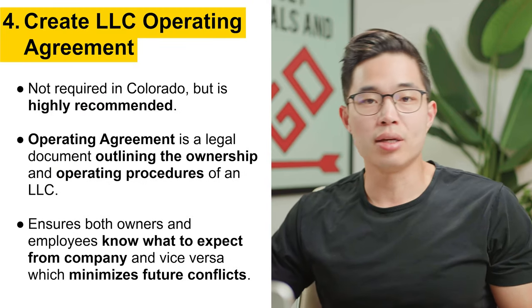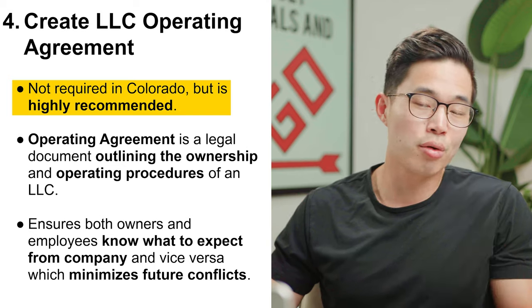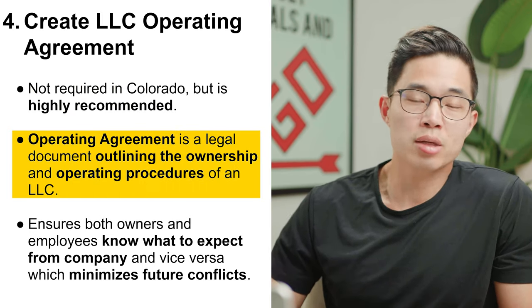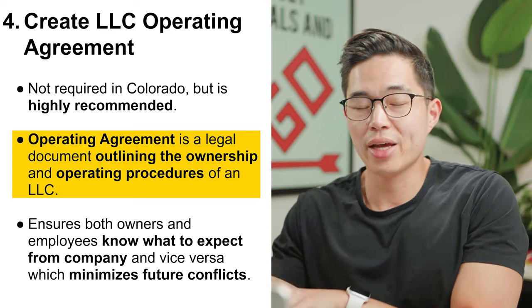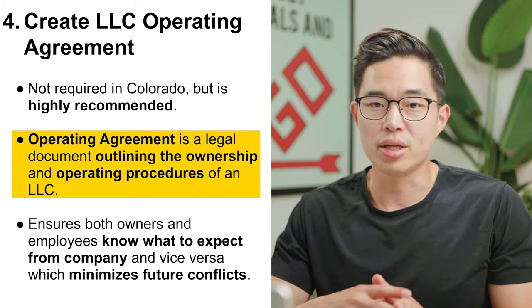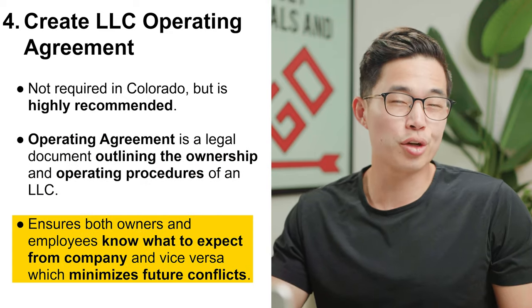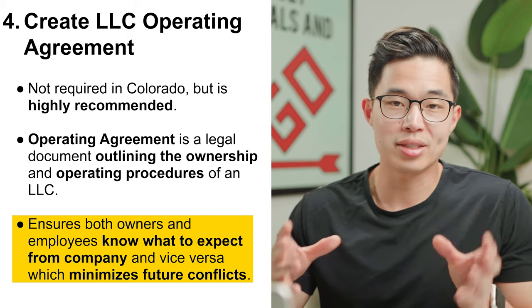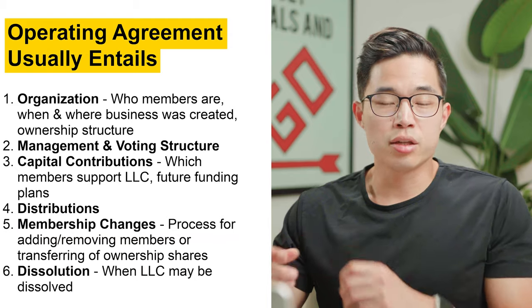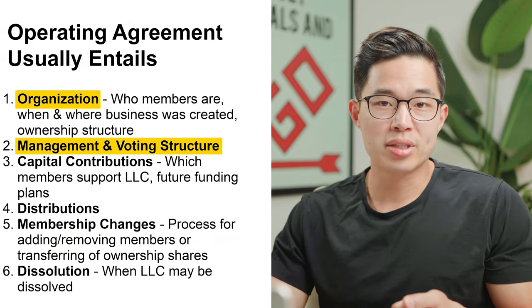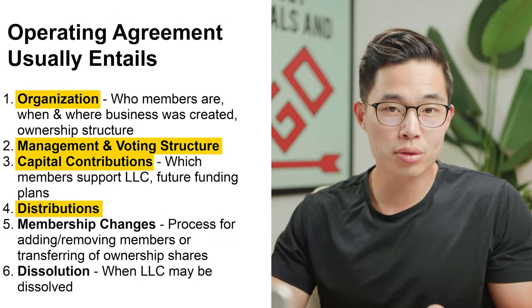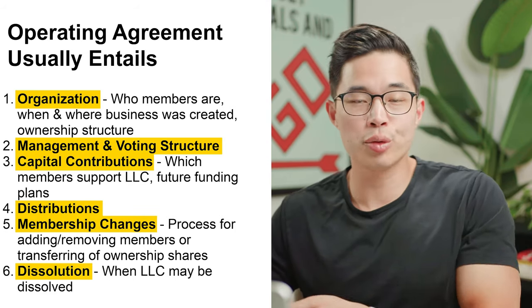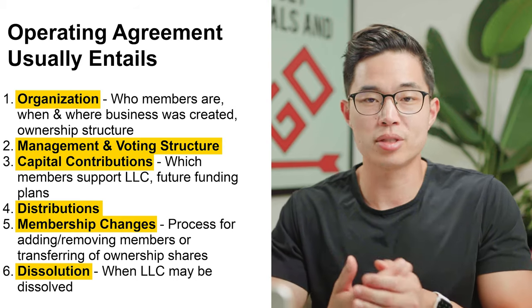Step number four is to create your LLC operating agreement. This is not required in Colorado but I do recommend having one. It's basically a legal document that outlines the ownership and operating procedures of your company, ensuring owners and employees know what to expect and minimizing future conflicts. In detail it includes your organization structure, management and voting structure, capital contribution rules, distribution rules, membership changes, and dissolution rules. A formation service can actually create your operating agreement for you.